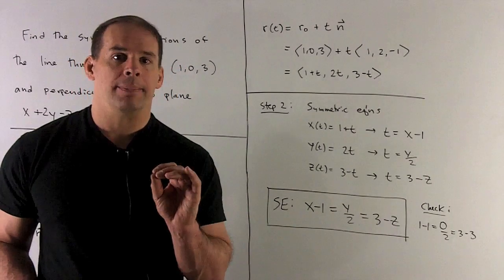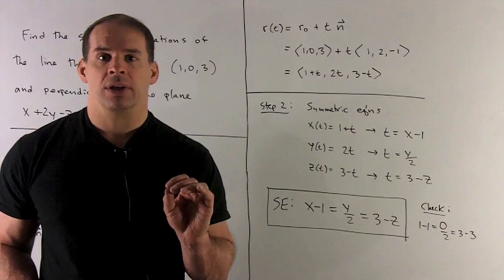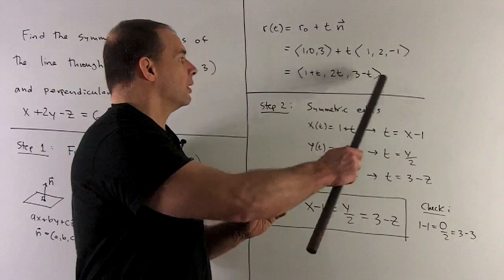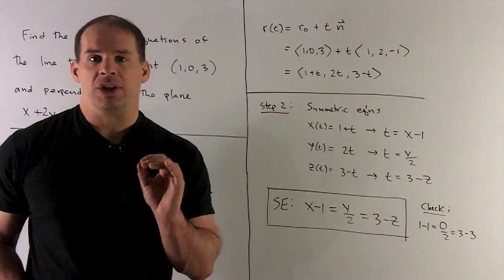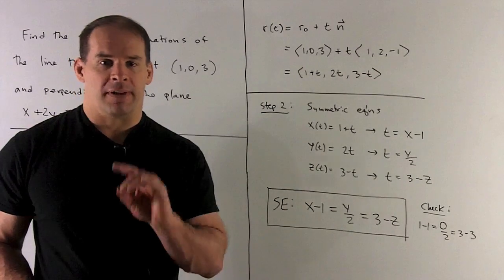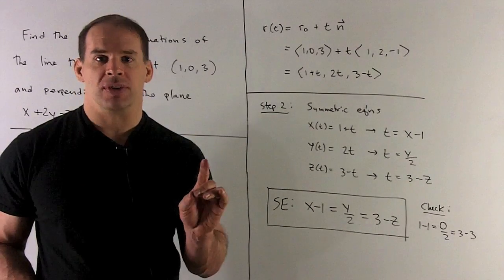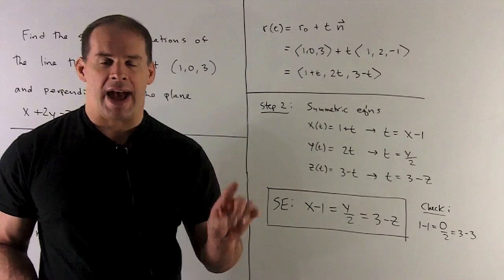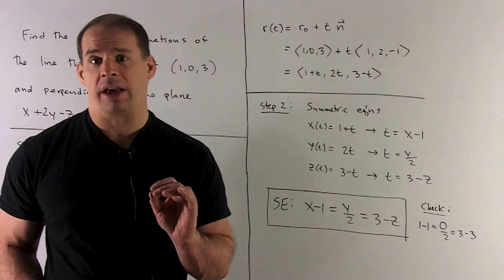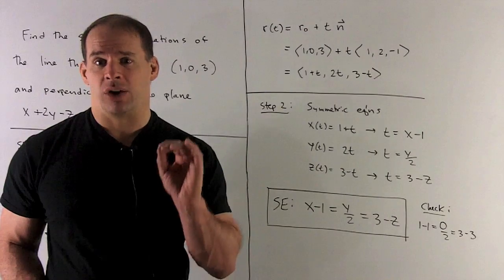Now, next step: symmetric equations. So the reason we can't stop here - while this does give us the equation of our line, we're taking an outside parameter to be able to define it. So that's what t is doing. The idea is t is sort of outside of the line. I don't need t to get a handle on our line. So we want to get rid of t in our equations.